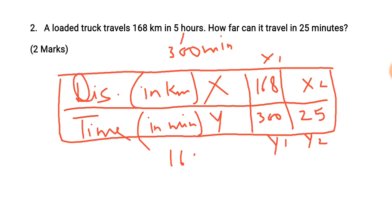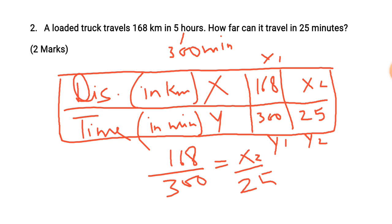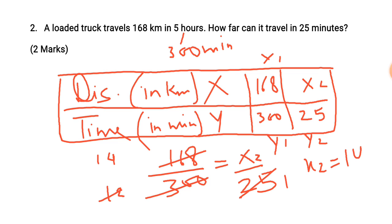So, 168 upon 300 is equal to x2 upon 25. Solving: 25 times 168 divided by 300 — working through the arithmetic — x2 is equal to 14 kilometers. The distance is 14 kilometers.